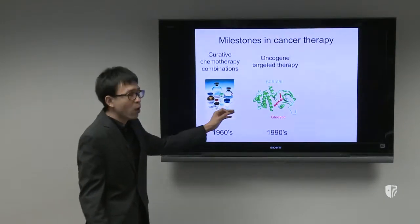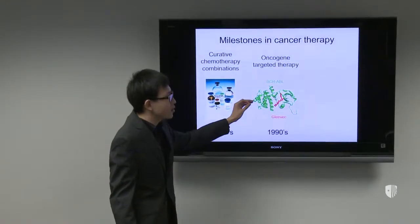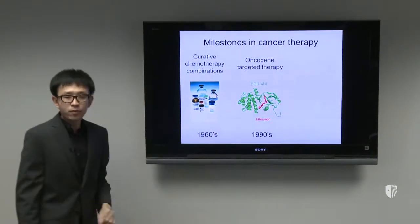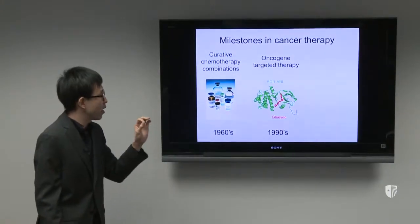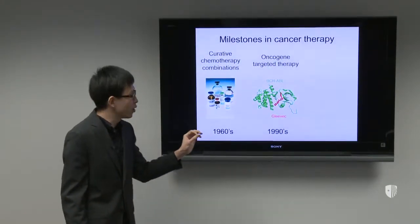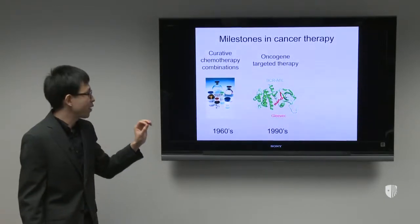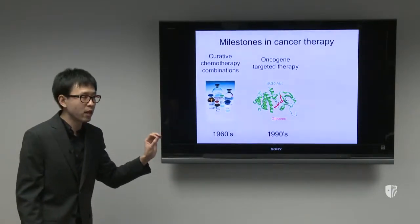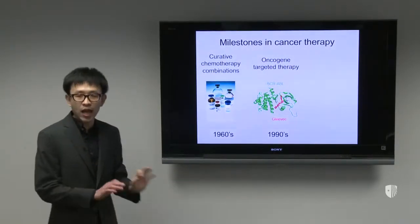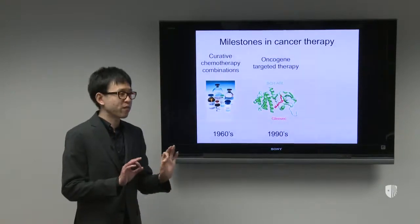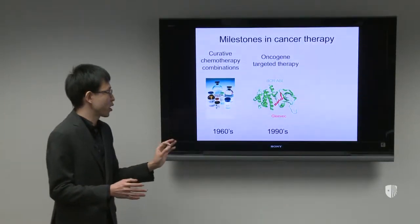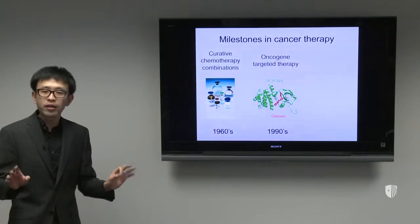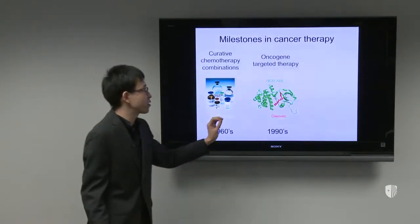One example is BCR-ABL, a mutation of a kinase in B-cell leukemia. If you develop a small molecule to inhibit the cancer driven by this mutation, this molecule — approved by the FDA in 1991 — can achieve 90% cure in this specific type of cancer. They do relapse, but with another molecule that fixes the poor mutation in this oncogene, they can basically cure 90% of this form of cancer with this mutation.